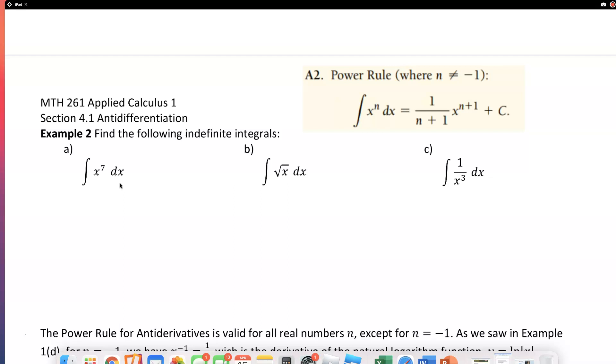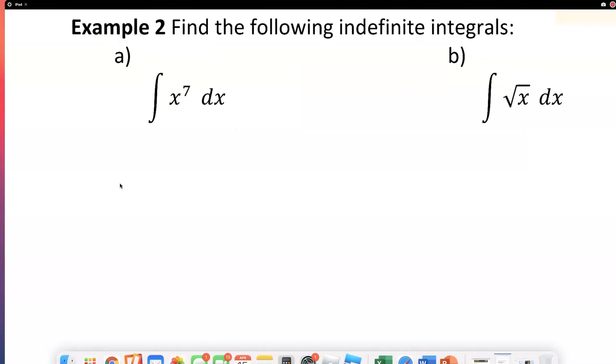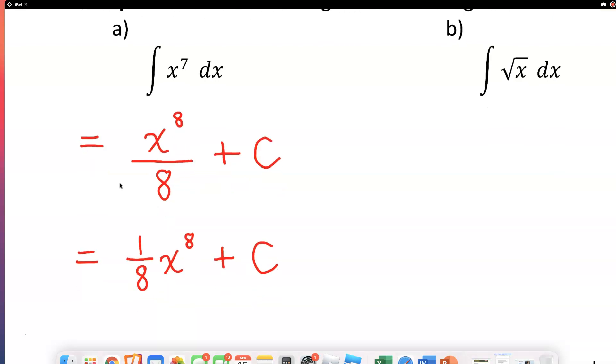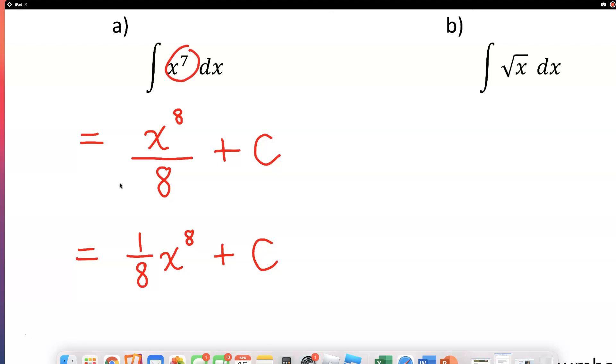So for problem number one or the first example, what we need to do is we make the new exponent to be one bigger than what it used to be. So x to the eighth power and you divide the whole term by 8 and put plus C and that's it for this one. You can write this as 1 over 8 x to the eighth power plus C and feel free to check your answer by taking the derivative of it, you will get x to the seventh power.